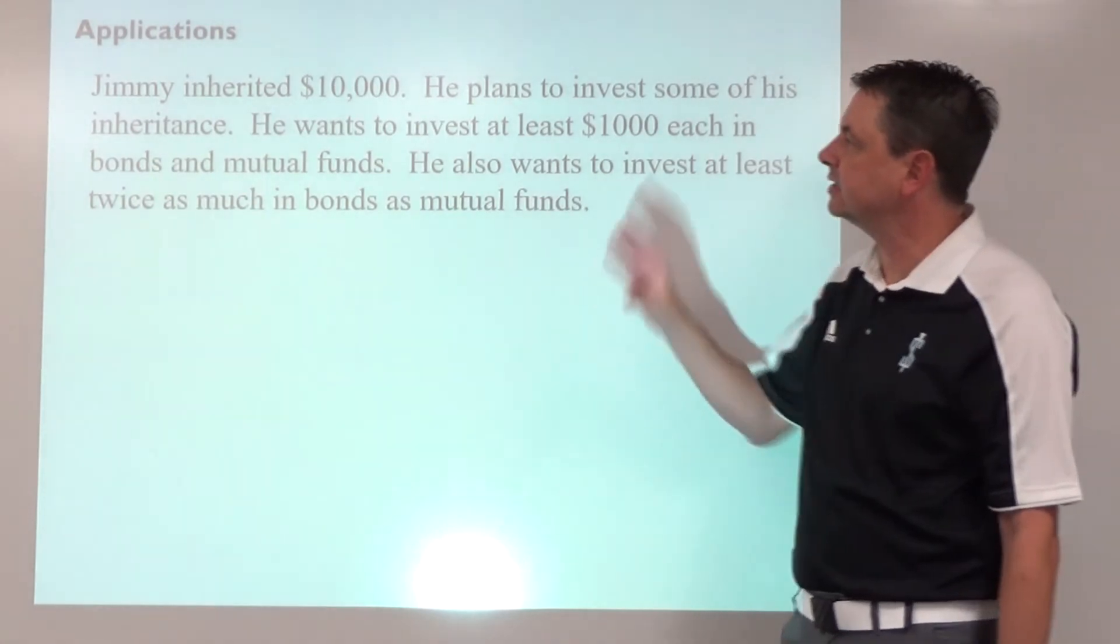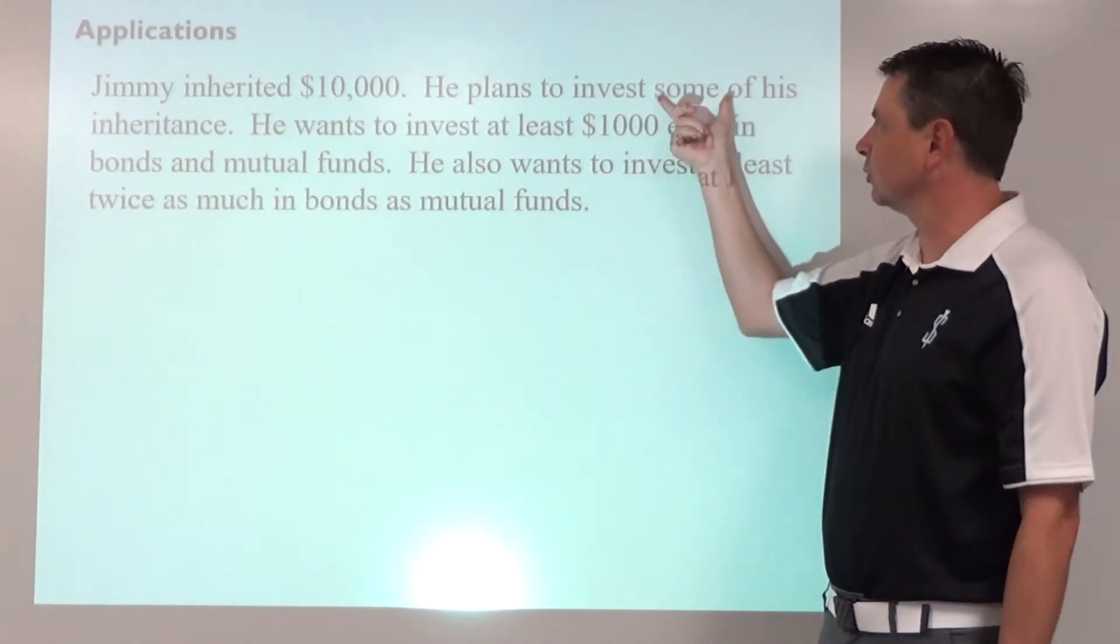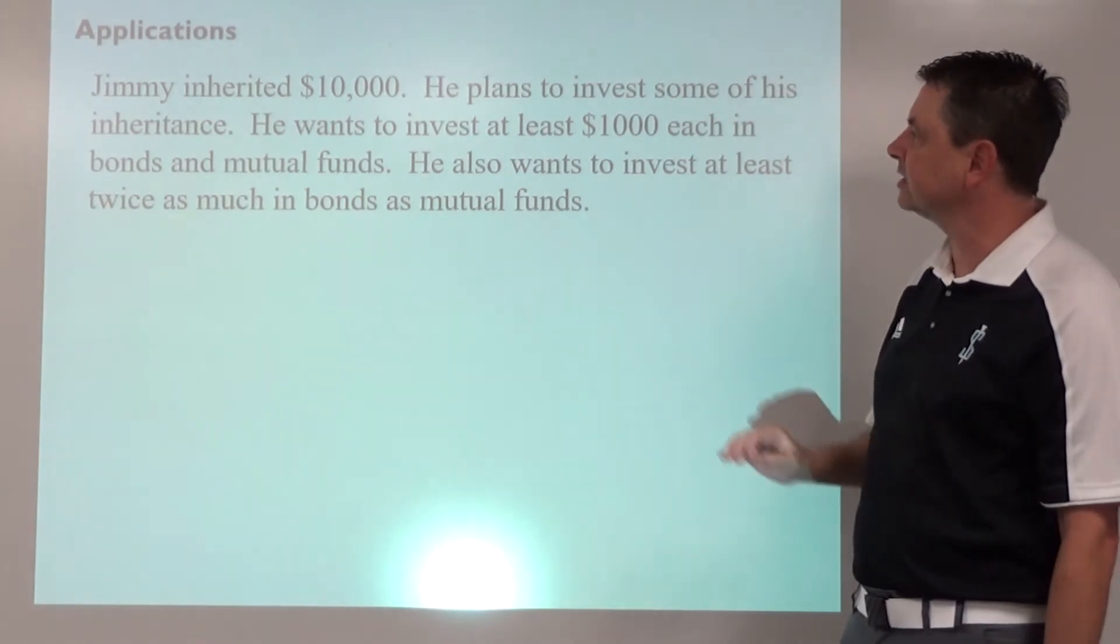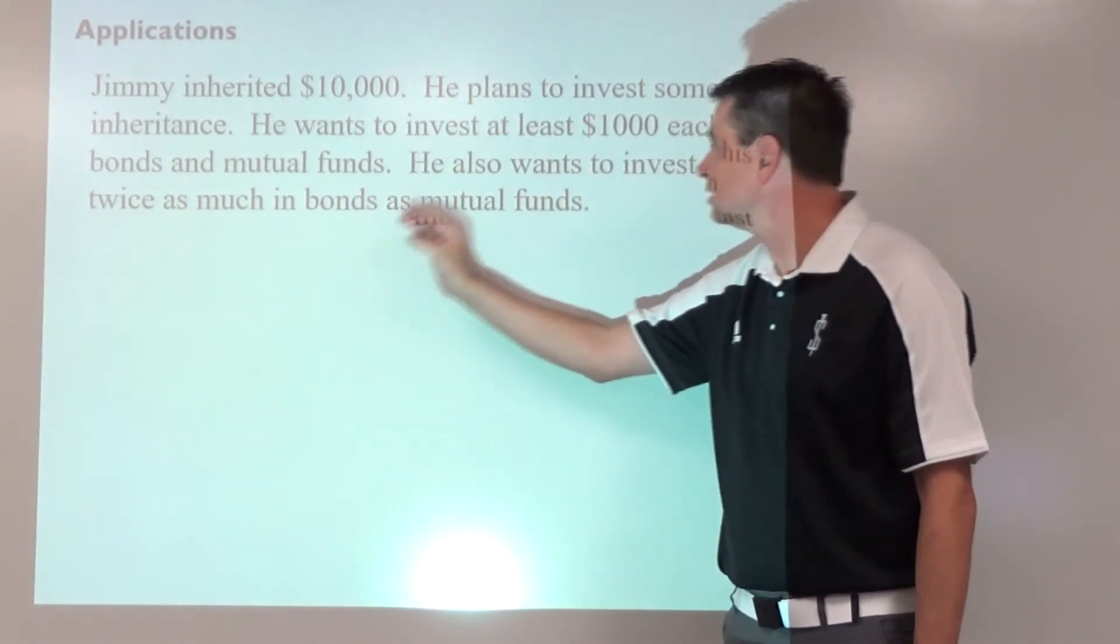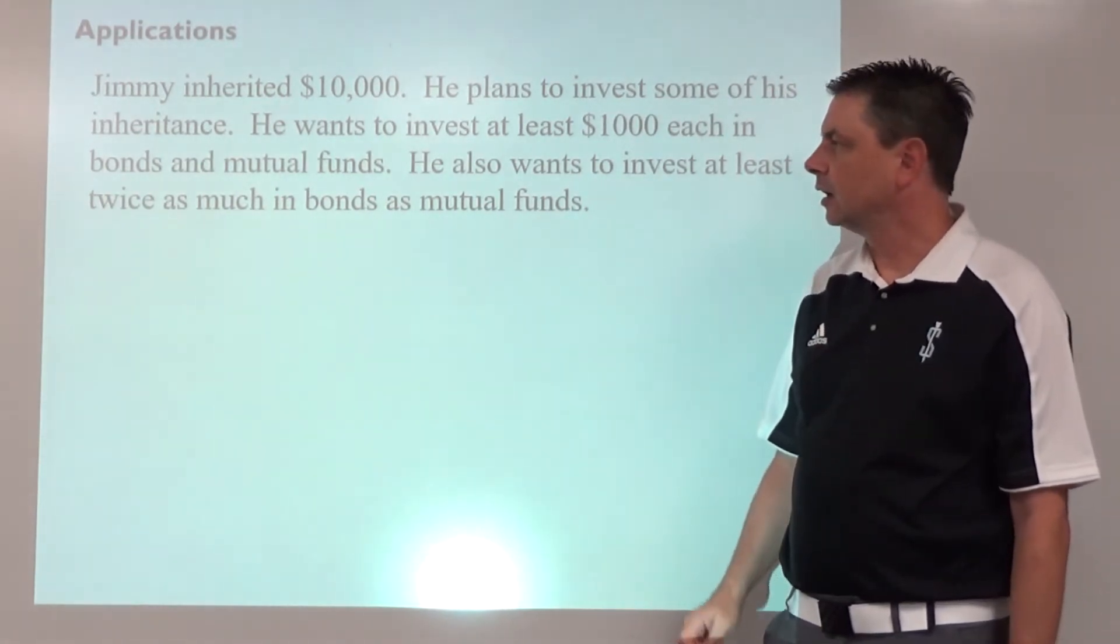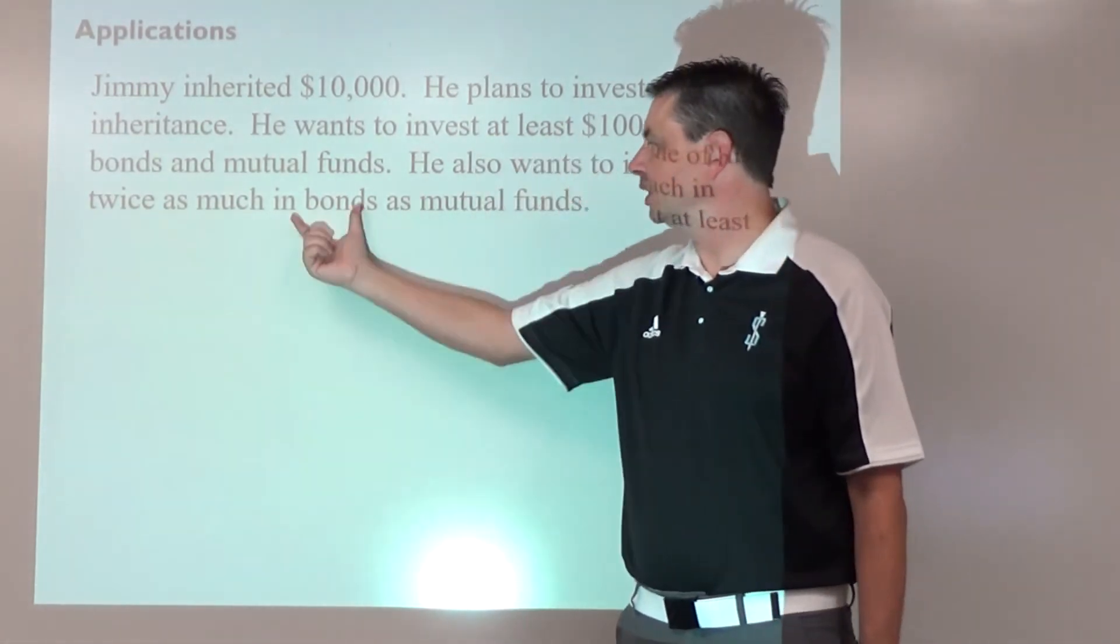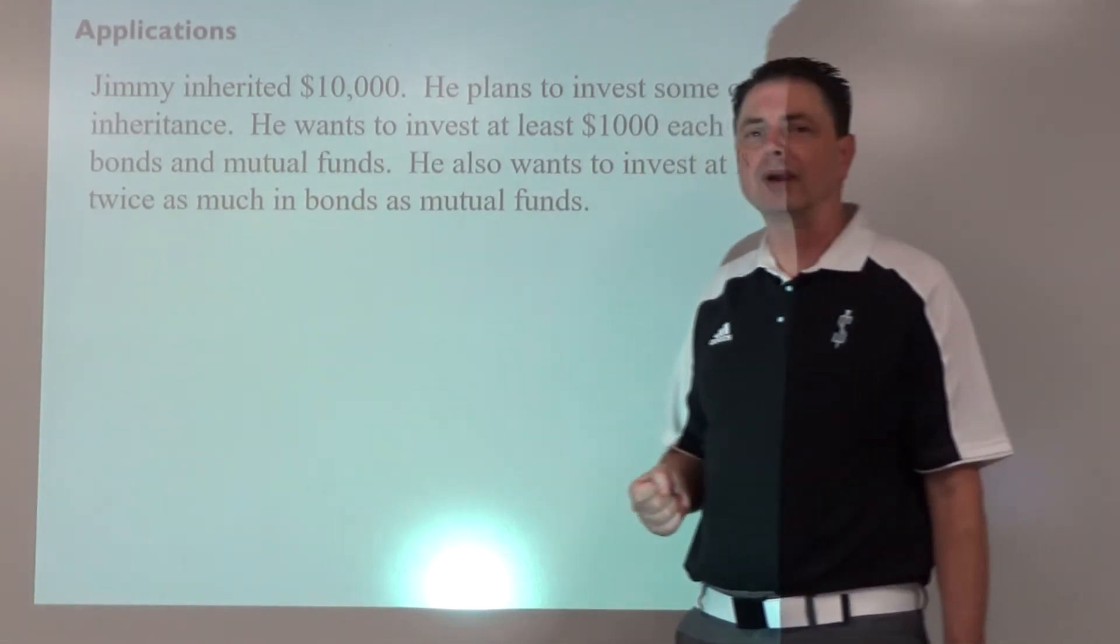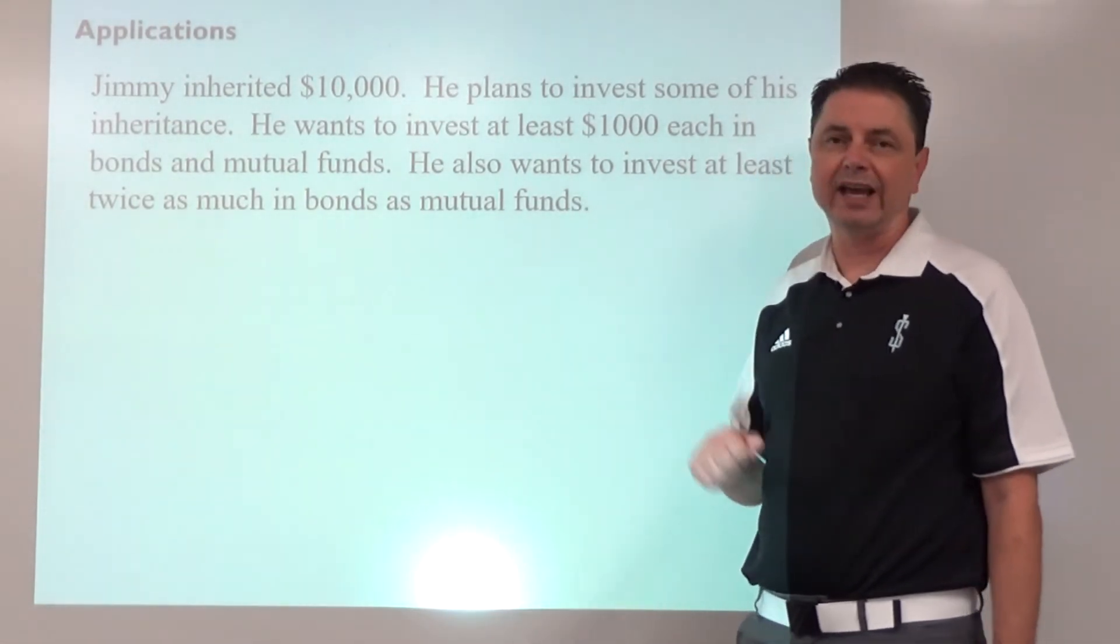How we might apply this: if we say that Jimmy has inherited $10,000 and he plans to invest some—and when we mean some, that means up to everything that he has—of his inheritance, he wants to invest at least $1,000 in bonds and separately mutual funds. He wants to invest at least twice as much in bonds as mutual funds. In other situations, we may choose different variables like b and m or something like that, just to connect to the problem, but as we are going to graph this and have points that are x-coordinates and y-coordinates, we really recommend you use x and y.